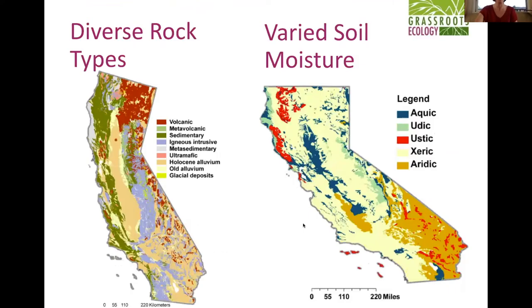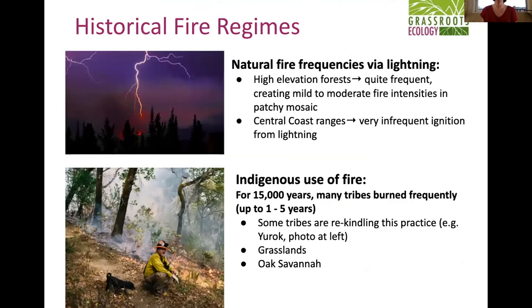Here are more illustrations of this diversity — parent rock types and generalized soil moisture and soil types. Thinking about fire in the landscape from a historical perspective, before any humans were on the landscape, the only way we had fire and ignition was through lightning, which typically happens at higher elevations.